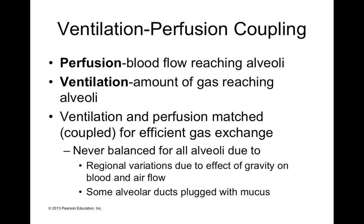This is one of the ways your lungs are able to regulate blood flow to well-ventilated areas. If an area of your lung were plugged with mucus and not getting good air flow, then your lungs start sending less blood to that part of your lung. It's a way to make gas exchange more efficient. The reason it's never really fully balanced is that we have regional variations due to gravity and air flow, and some alveolar ducts can be plugged with mucus, but we can alter these ratios to give us the highest return on investment.